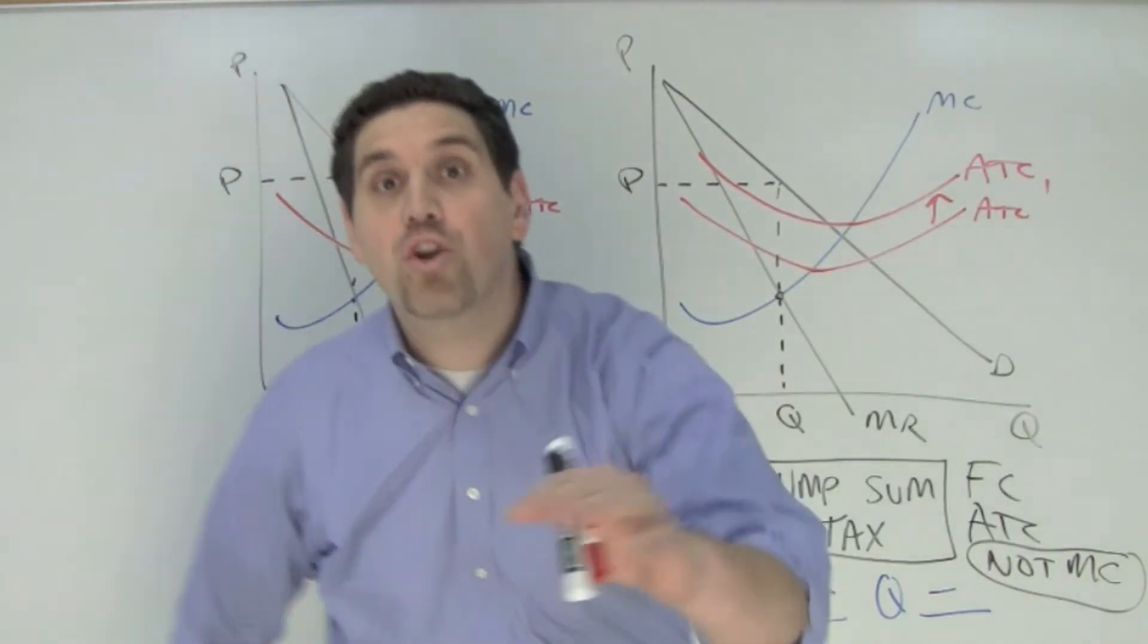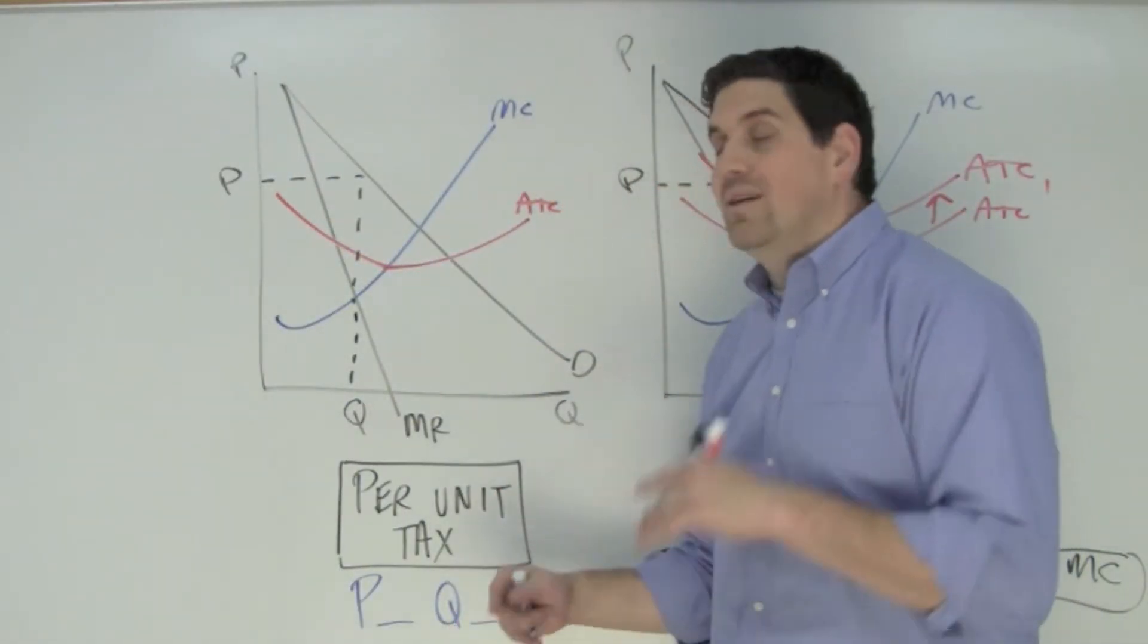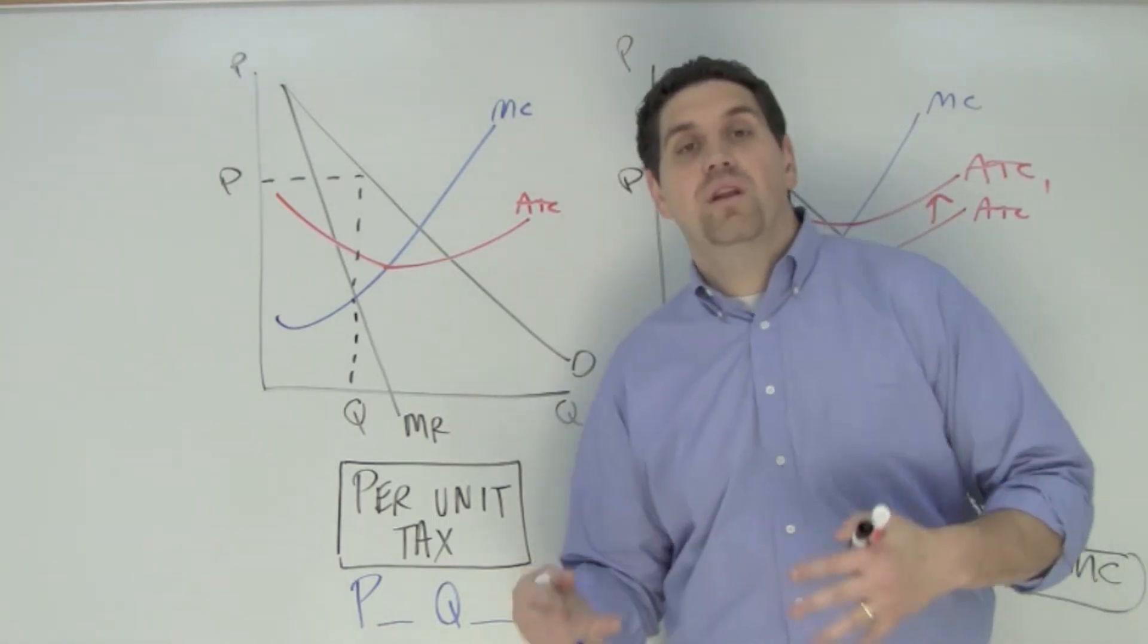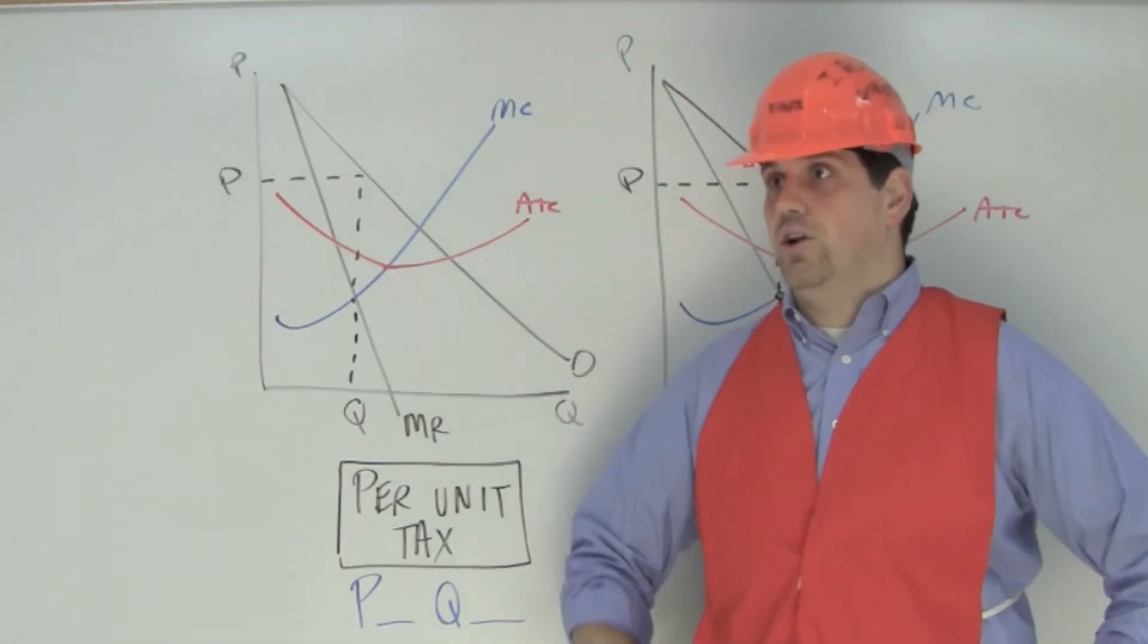Bonus round. What about a per unit tax? A per unit tax is a tax on producers for every single unit they produce. For every unit you're going to produce, you're going to have to pay us a dollar.